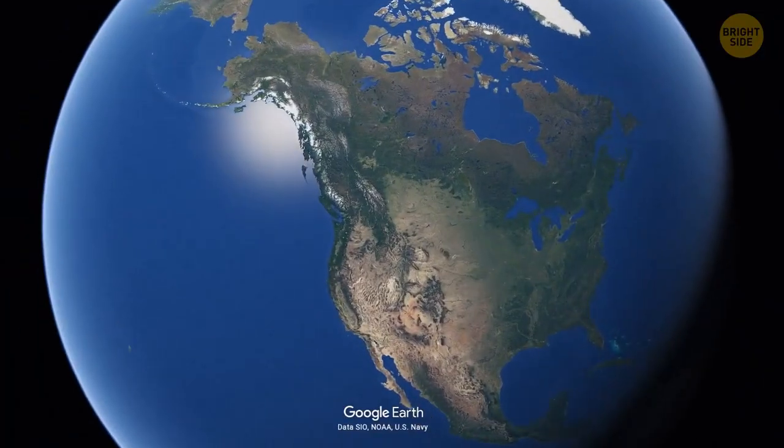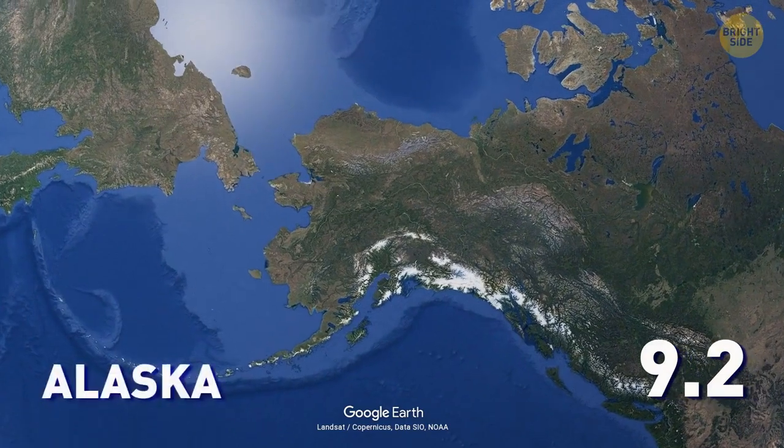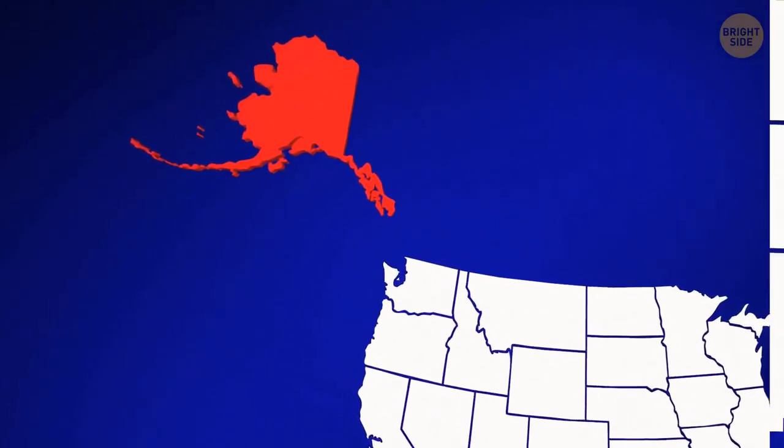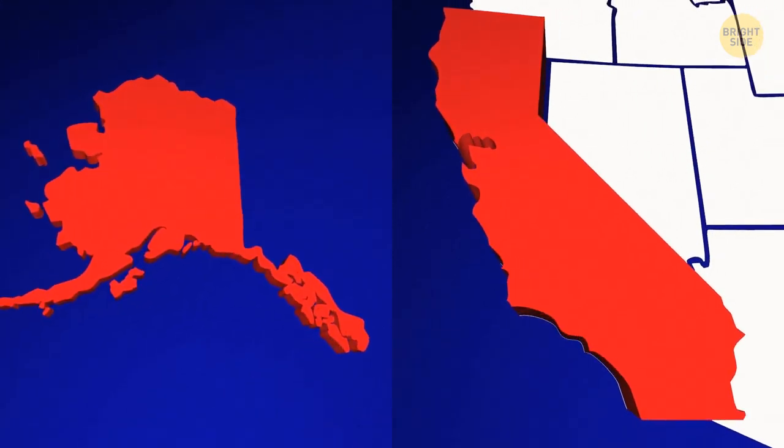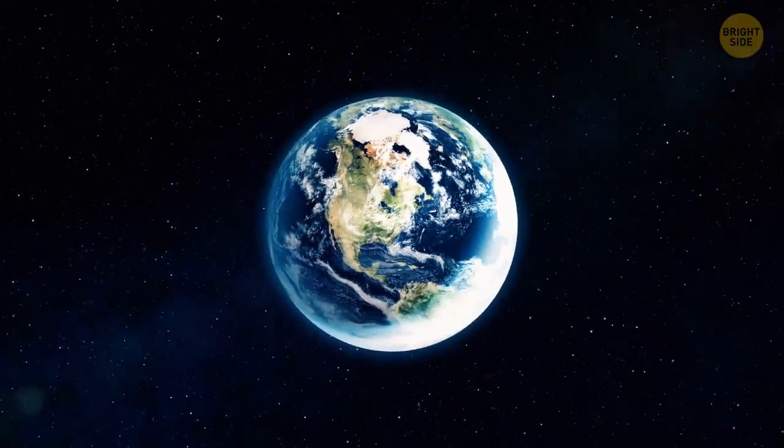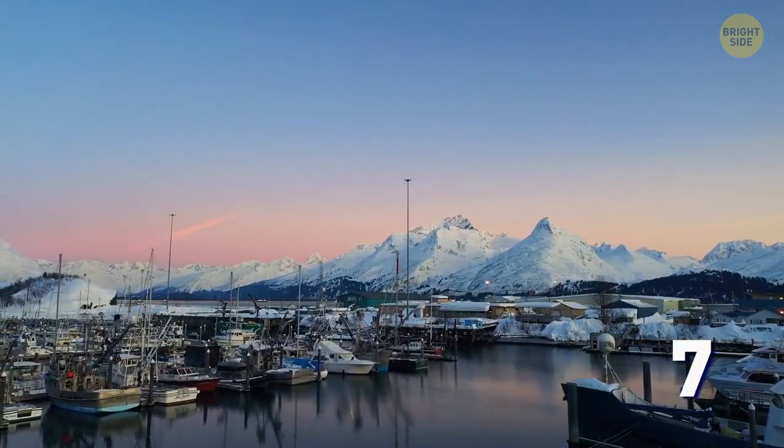As for the most powerful earthquake that occurred in the US, it was 9.2 and happened in Alaska. By the way, Alaska, along with California, is the most earthquake-prone state in the US and one of the most seismically active regions in the world. A magnitude 7 earthquake occurs there almost every year.